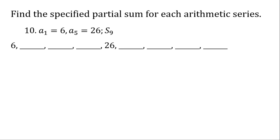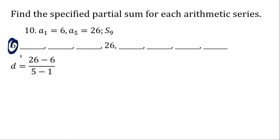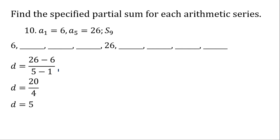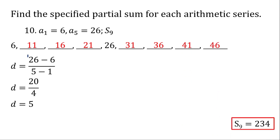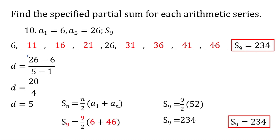Last problem: 26 minus 6 is 20, and since this is a sub 5, we have 5 minus 1 equals 4. So 20 divided by 4 is 5 — our common difference is 5. Adding 5 each time starting from 6: 6, 11, 16, 21, 26, 31, 36, 41, 46. You can add all of them, or just use the formula — either way you get the same answer.